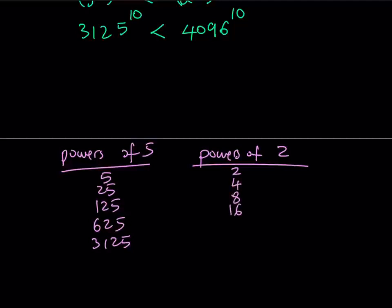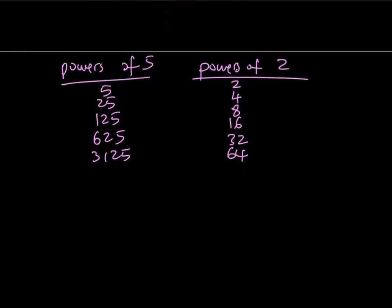you notice that they're fairly easy to find. 2, 4, 8, 16, 32, 64. Notice that they don't grow that fast compared to powers of 5, obviously. 128, 256, 512, 1024, 2048. Let's just go at least all the way up to 2 to the 12th power because that was our first comparison.